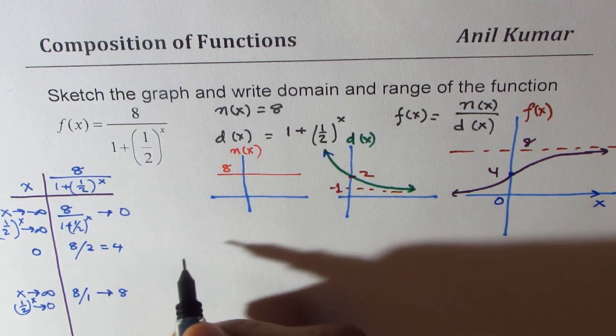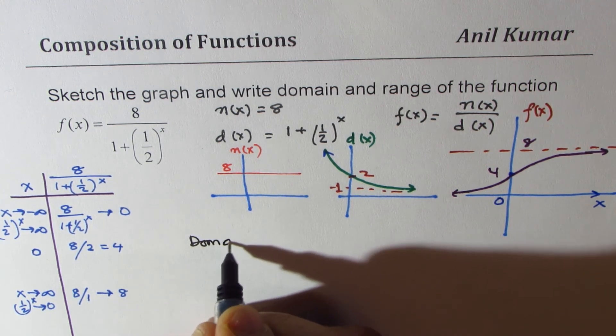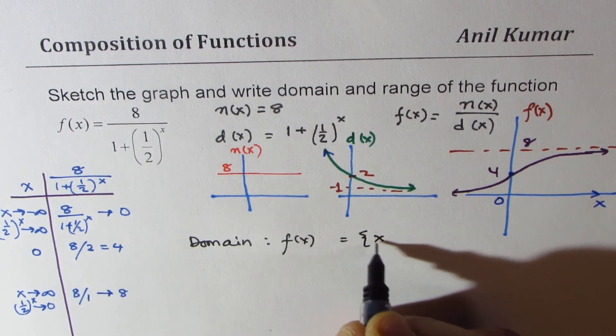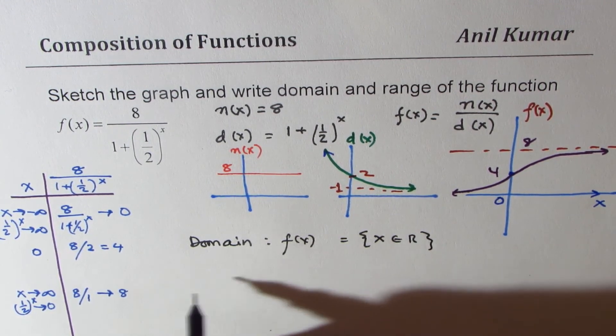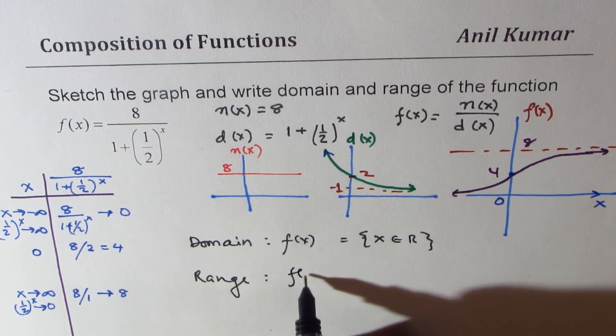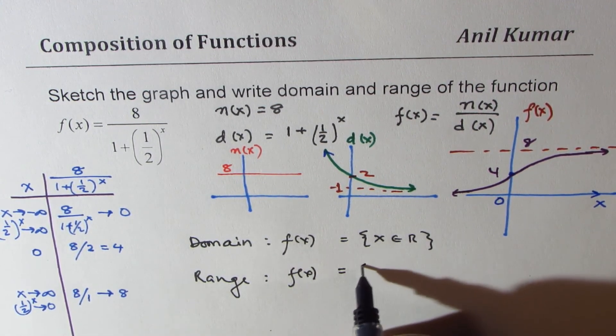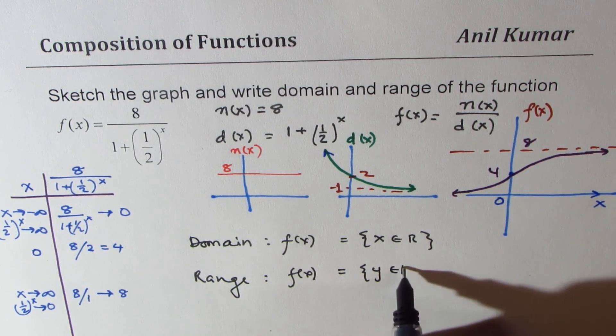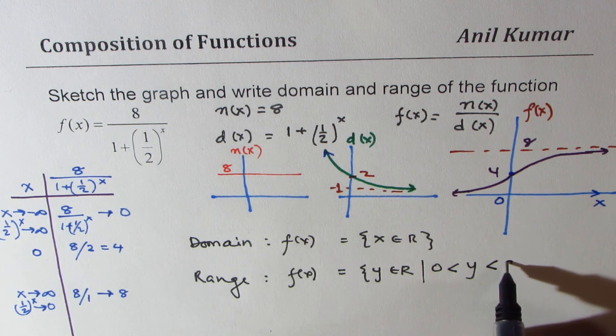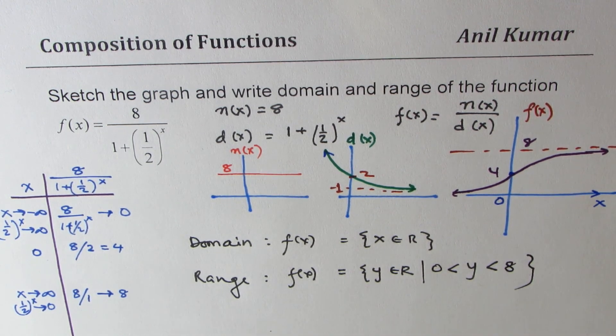And that is that the domain of f(x) is x belongs to real numbers, and the range of f(x) is y belongs to real numbers, however, y is greater than 0 and less than 8. Correct?